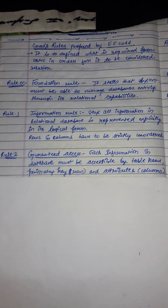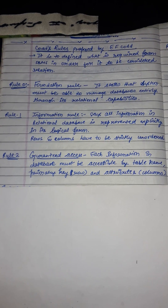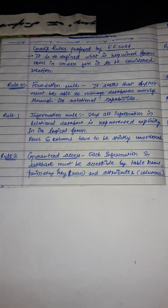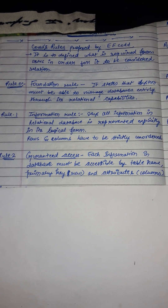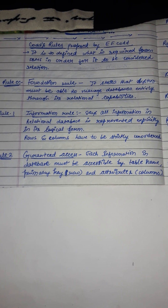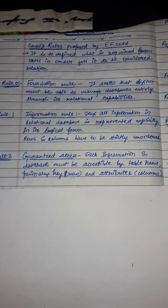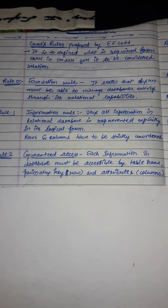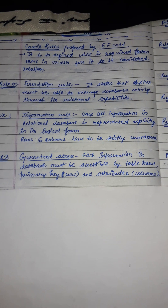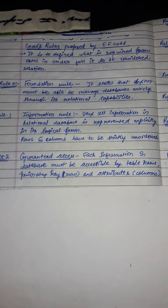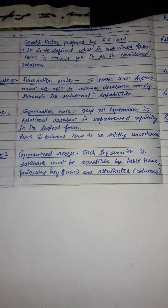Rule 2 is guaranteed access. Each piece of information in the database must be accessible by table name, primary key, and attribute columns. All data should be accessible without ambiguity. This can be accomplished through a combination of table name, primary key, and column name.